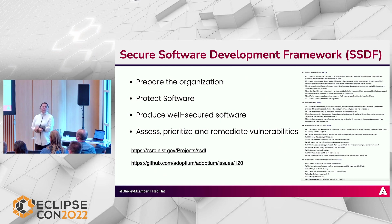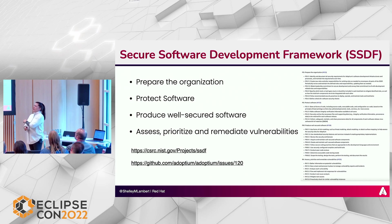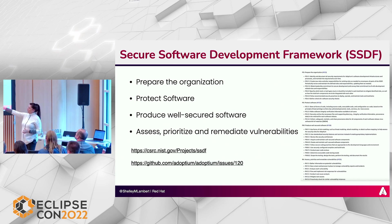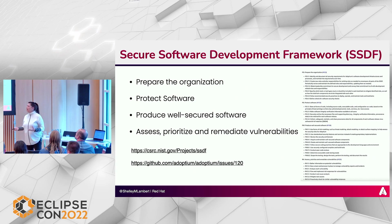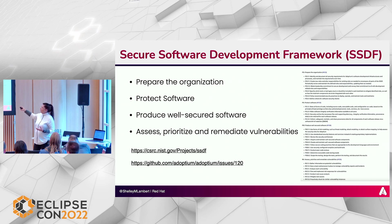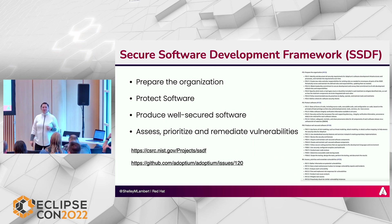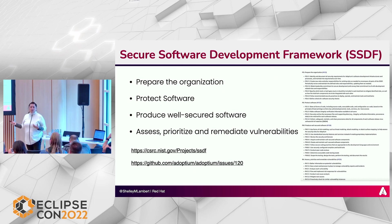On the SSDF — before Eclipse Foundation even began the SALSA work, we had already proactively decided to take this NIST framework and apply it to our project. There are details in our tracker for where we're at going through the checklist. Essentially, it has four top-level pieces: prepare the organization, protect the software, produce well-secured software, and continuously assess, prioritize, and remediate vulnerabilities. Because we were automating everything from the beginning, some of this is more of a documentation exercise — documenting what we're already doing.